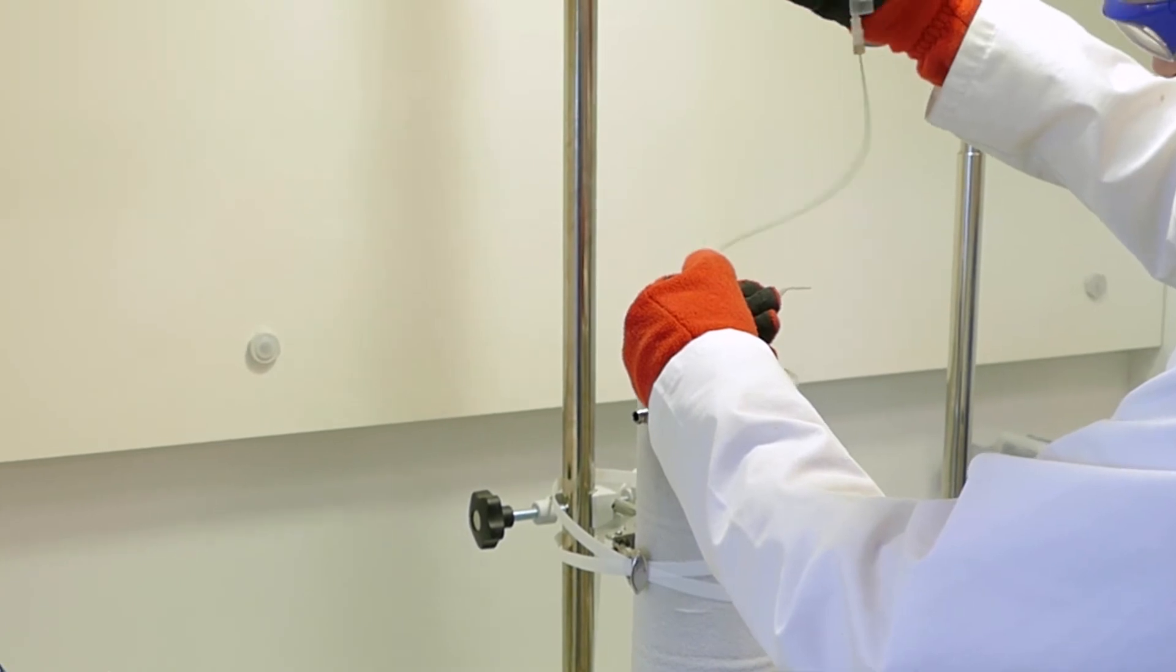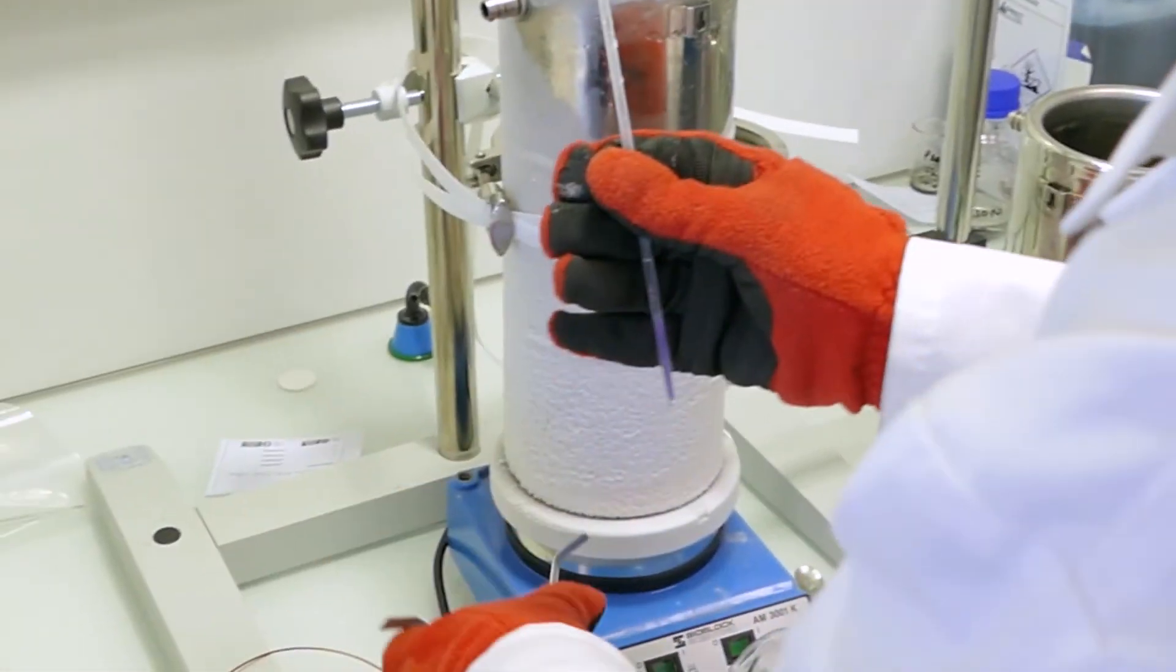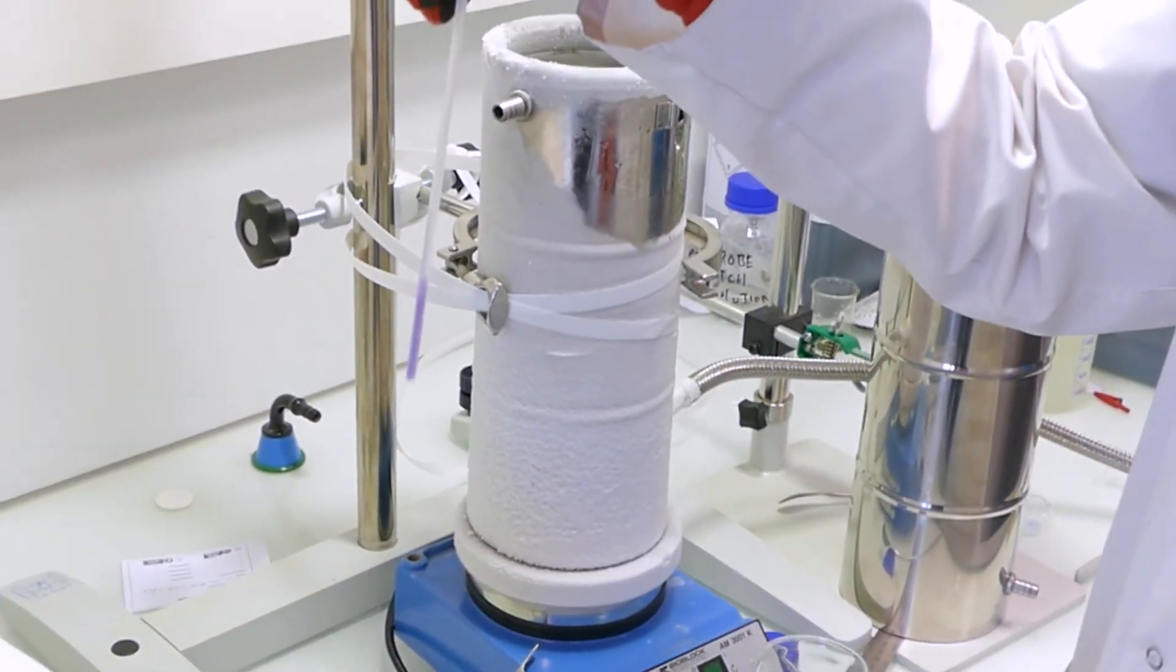Pull the remaining isopentane from the EPR tube. Remove the EPR tube from the funnel accessory. It can now be stored in liquid nitrogen for future analysis.